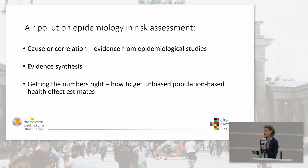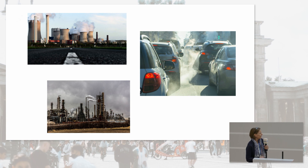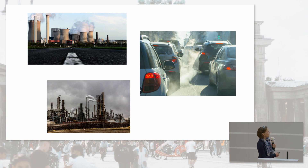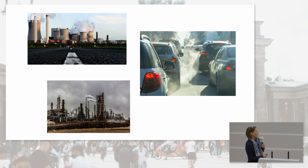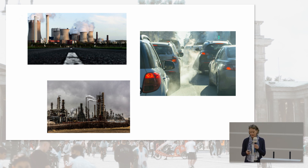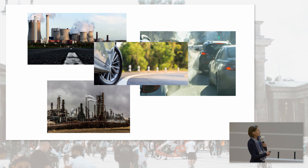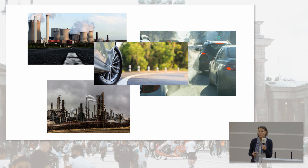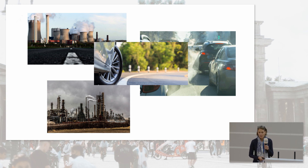To bring you up to speed on air pollution epidemiology, I'll start with a little introduction to air pollution. When you hear about air pollution, you probably think about traffic — what comes out of the tailpipe — or coal burning power plants or industry. But several things you probably do not think about: the wear from tires, from brakes, from the road. Today in Germany, about half of the particles from traffic do not come out of the tailpipe, but come from tire, road, and brake wear.